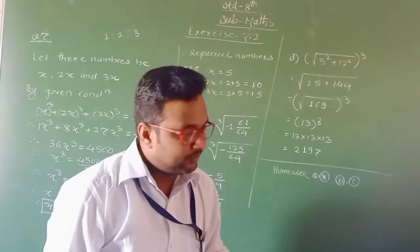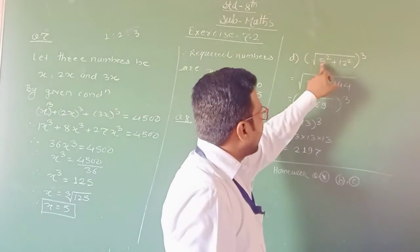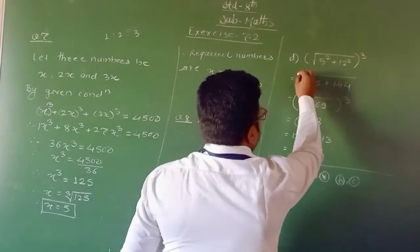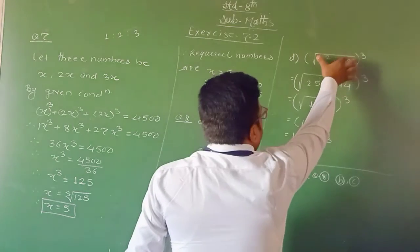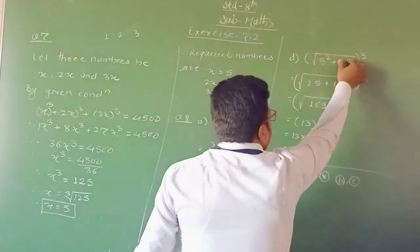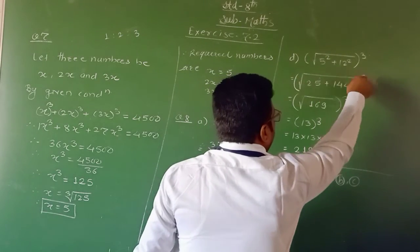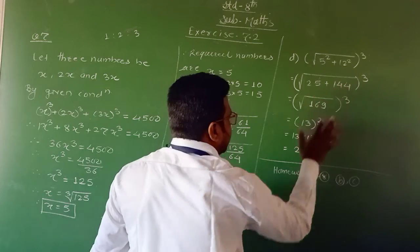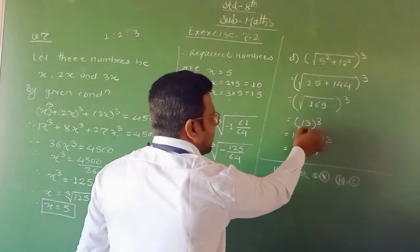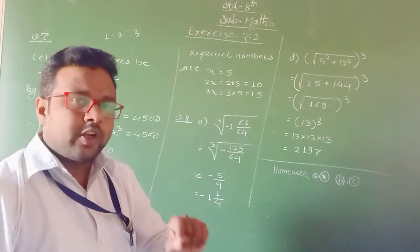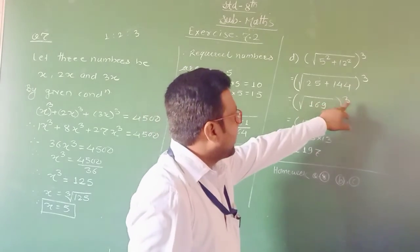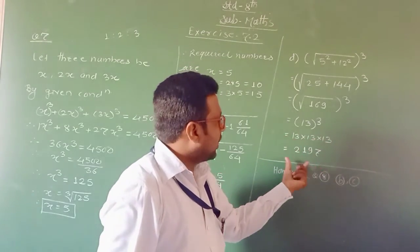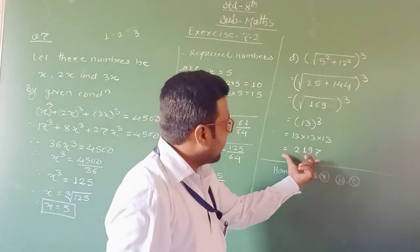One more example — I take example D: cube root of (5² + 12²) whole cubed. First, we solve the bracket: 5² = 25, 12² = 144. So we get square root of (25 + 144) = square root of 169, whole cubed. Square root of 169 = 13. Then 13 whole cubed = 13³ = 13 × 13 × 13 = 2,197. This is the required answer.